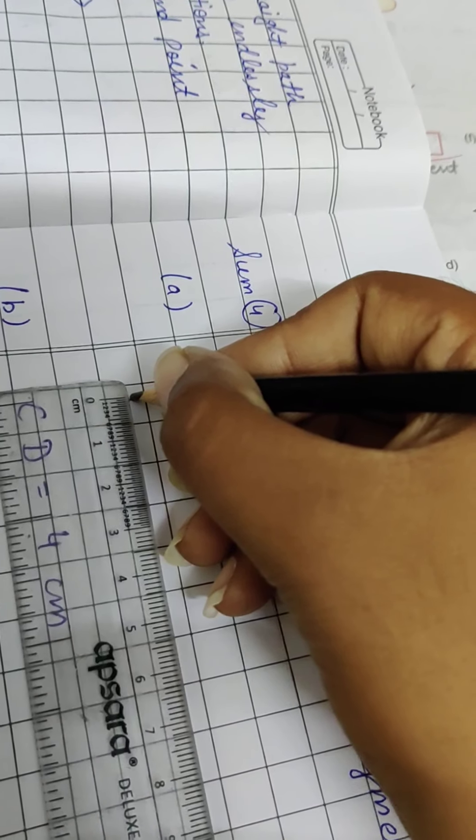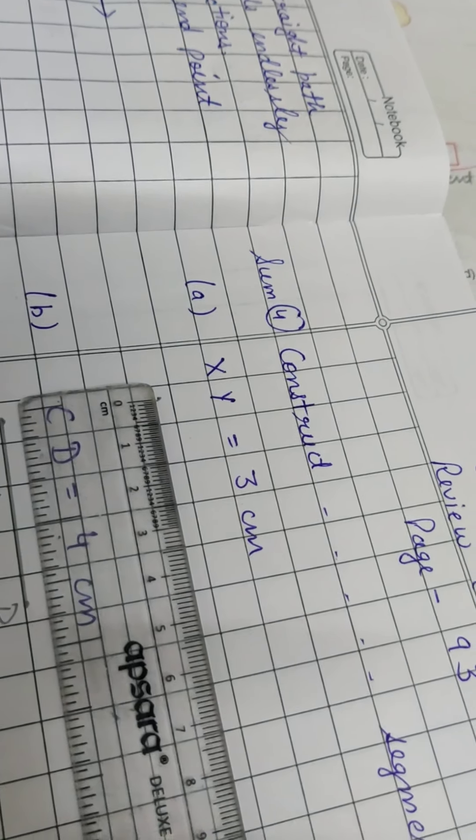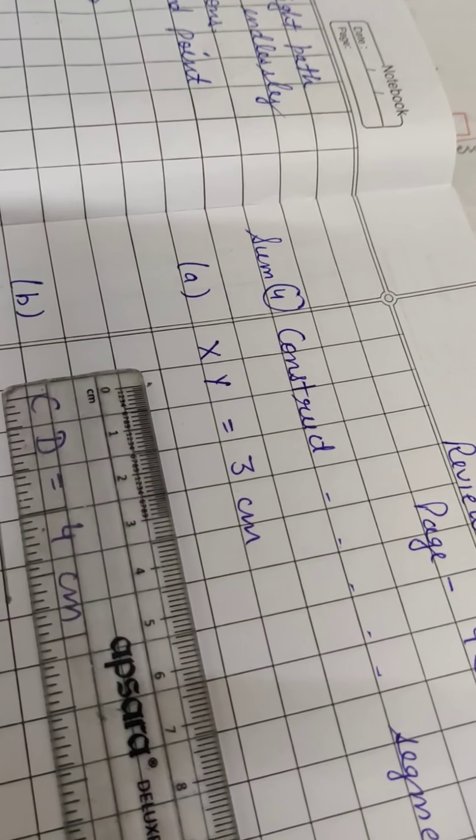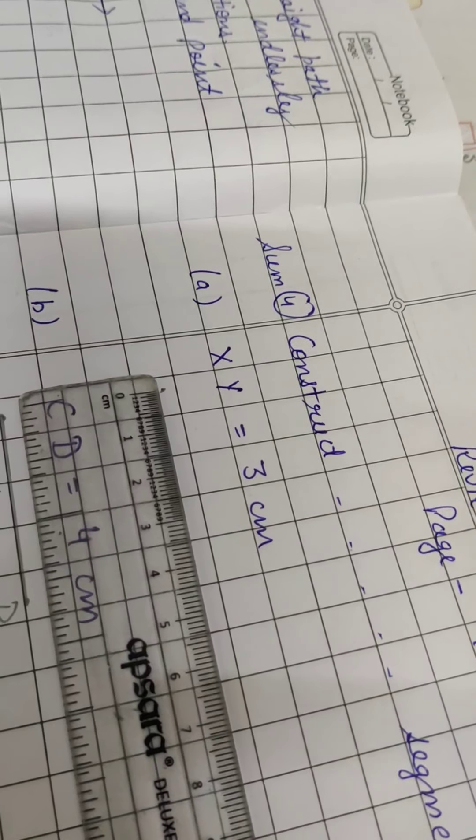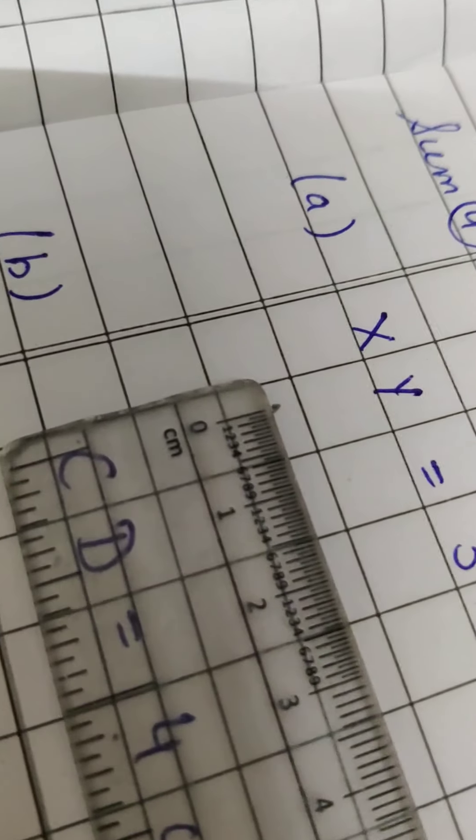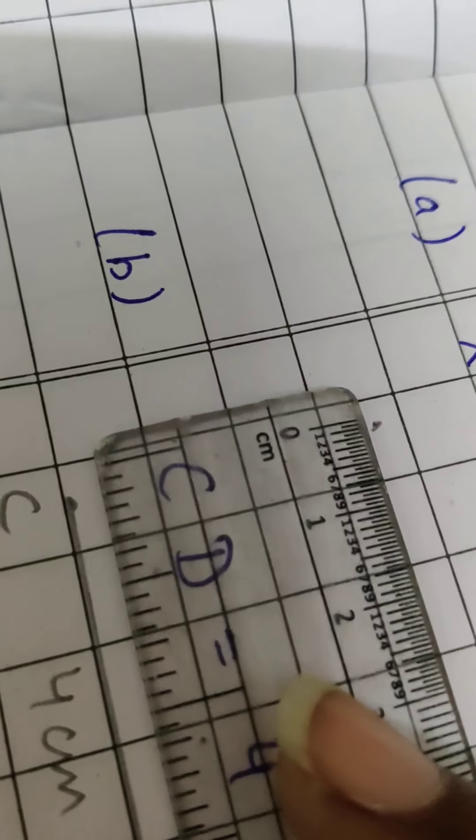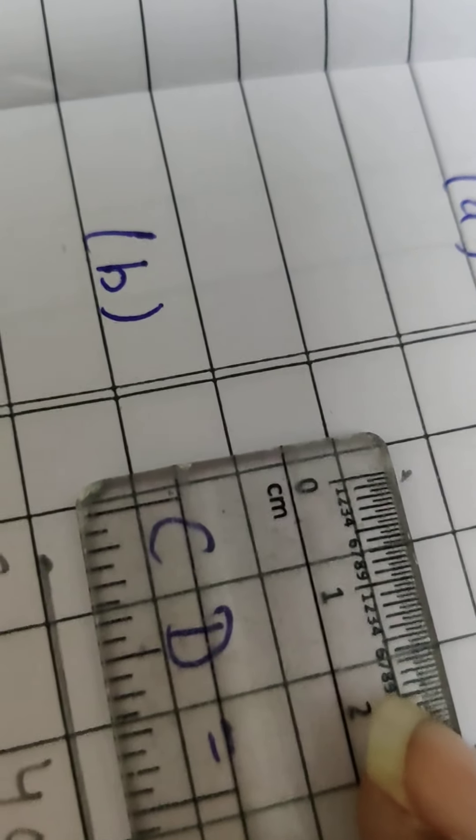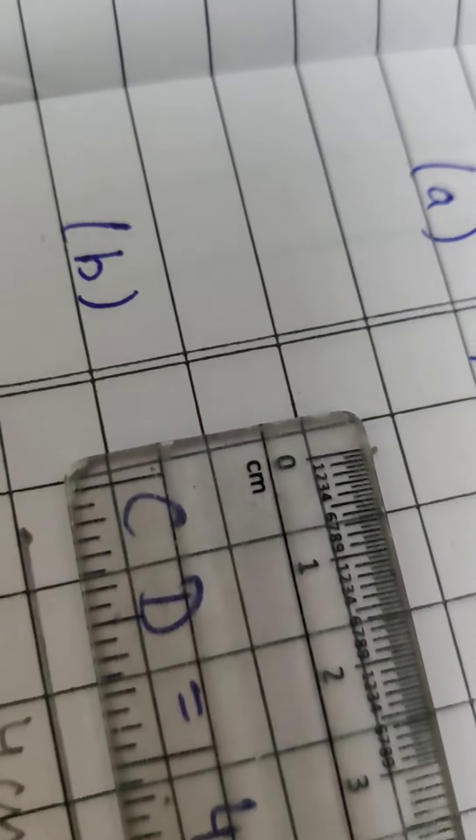And 0 is written on some scales and not on some scales. So the first line starts, that is the 0. Clear? So first point is 0, then we will draw the line segment 3 cm. So you will keep the scale stable with one hand in one place. You have to draw the point and the second point is where?